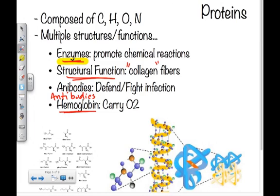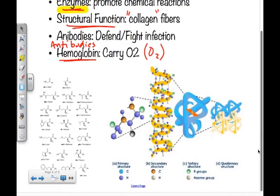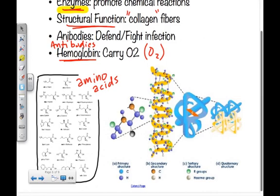The building blocks of proteins are known as amino acids. There are 20 different amino acids in your body. These 20 combine with each other in many different sequences to create all of the different proteins present in a human. All of these proteins we have are composed of only 20 different amino acids — pretty special stuff.